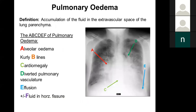Pulmonary edema is defined as accumulation of fluid in the extravascular spaces of the lung parenchyma — typically the alveoli, but also the intralobular septa, which gives certain features on the chest film. It's also a spectrum: as a medical student you're most likely tested on extreme pulmonary edema, but mild pulmonary edema is very hard to diagnose on CXR and you often have to correlate with the patient's presentation and risk factors.